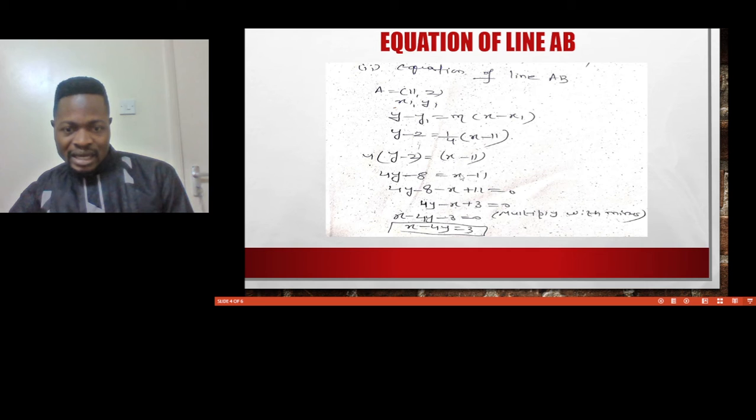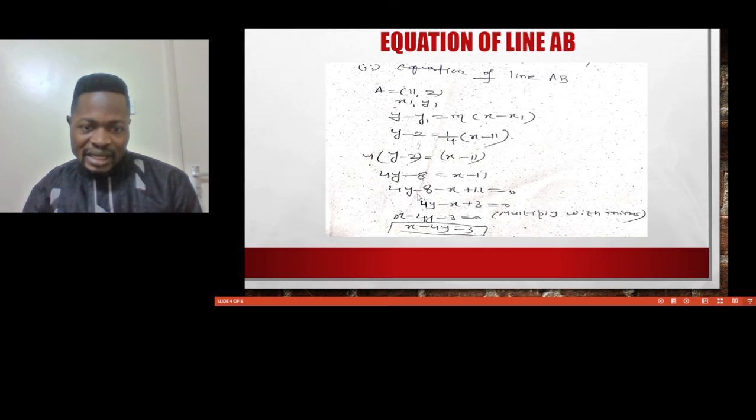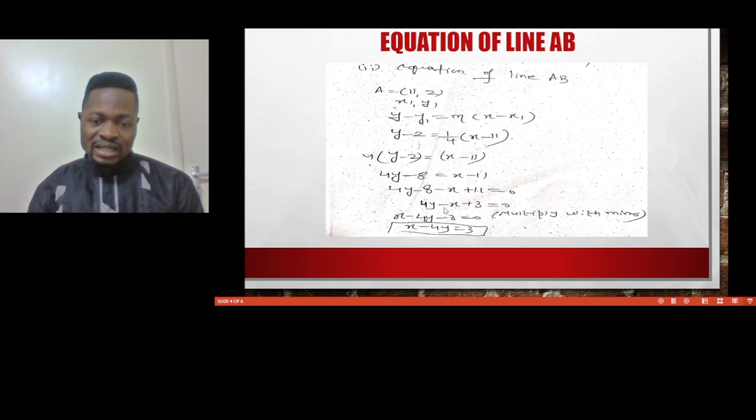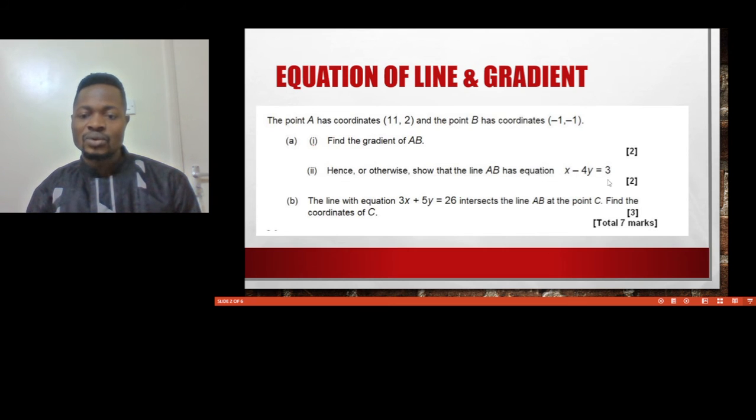When we bring both together, this will be 4Y minus 8. When you cross X to the other side, it becomes negative, so we have X minus 4Y plus 3 equals 0. After simplification, we end up with X minus 4Y equals 3, and this is the equation of the line as we were given originally.